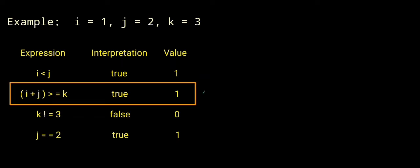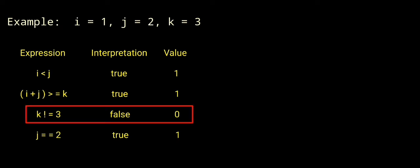Next expression: i plus j greater than or equal to k. i value 1, j value 2, so 1 plus 2 is 3. 3 greater than or equal to k value 3, so the interpretation is true, value 1. Next expression: k not equal to 3. k value 3, so 3 not equal to 3 — condition is false, interpretation is false, value 0.